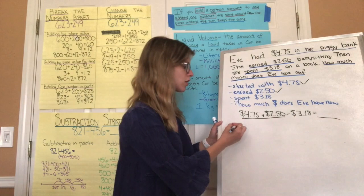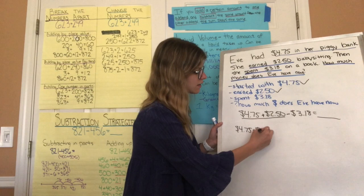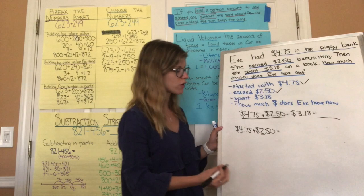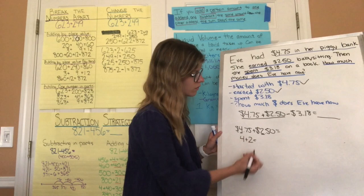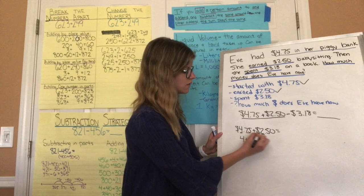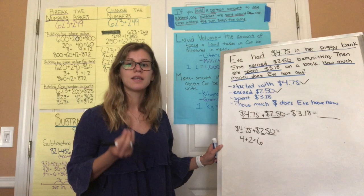Now we're going to go over it together. If she started with four dollars and seventy-five cents and then added two dollars and fifty cents, I'm going to first focus on the whole numbers — the whole dollars. She has four dollars and two dollars, and four plus two equals six. Then I see she has seventy-five cents and fifty cents.